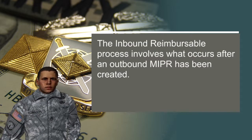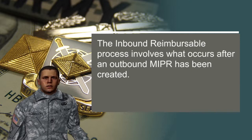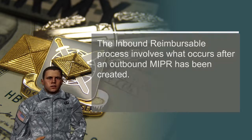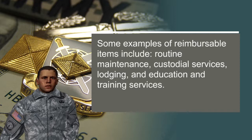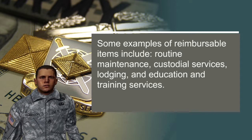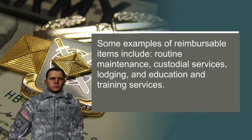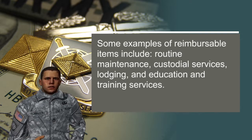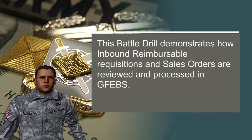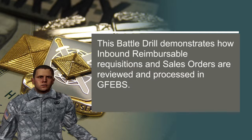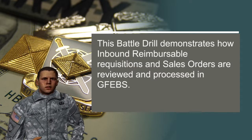The inbound reimbursable process involves what occurs after an outbound MIPR has been created. Some examples of reimbursable items include routine maintenance, custodial services, lodging, and education and training services. This battle drill demonstrates how inbound reimbursable requisitions and sales orders are reviewed and processed in GFibs.